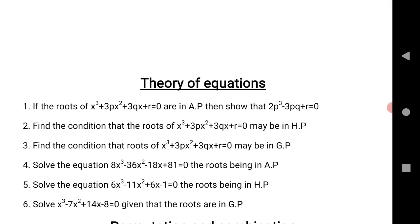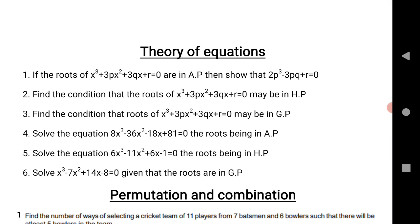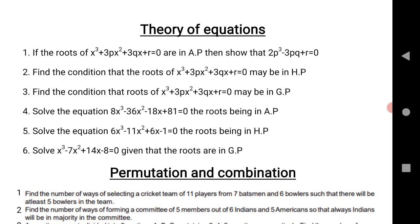The next chapter is Theory of Equations, which is only for TS students, not for AP students. The first question: if the roots of x³ + 3px² + 3qx + r = 0 are in AP, find the condition. The next: find the condition for the roots to be in HP. Third: find the condition for the roots to be in GP. AP, HP, and GP are very important questions — we are expecting four marks from this chapter. TS students, practice these six questions.